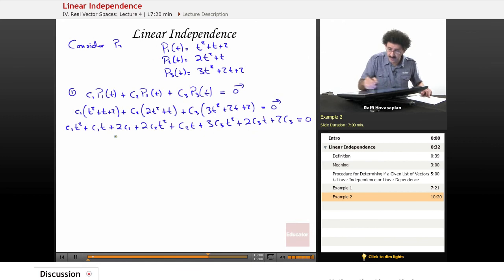I collect the terms, the t squared terms. So I have that one, that one, and that one. And I end up with t squared times C1 plus 2C2 plus 3C3. And then I'll take the t terms.